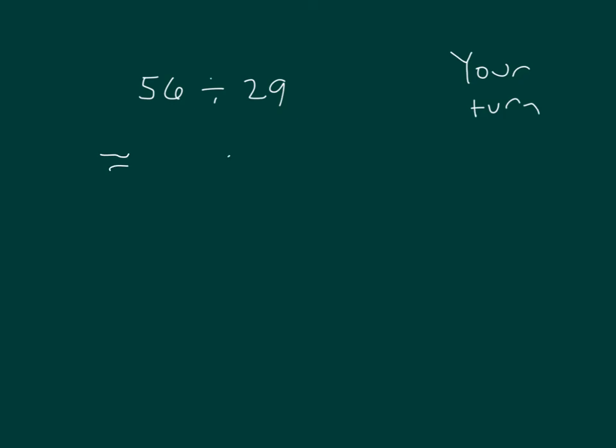Our estimate for this that you probably did was 60 divided by 30, which is 2. Now, if you take your standard algorithm and try to use 2, though, it won't work.